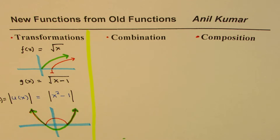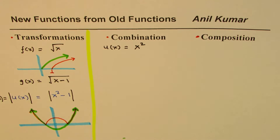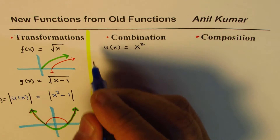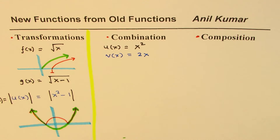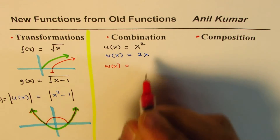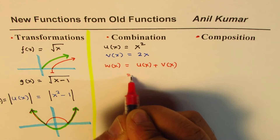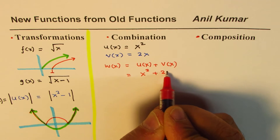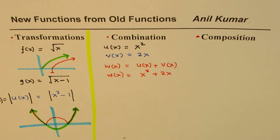Now let's look at combinations. Let's take a function u of x equals x squared — a parabola — and combine it with another function v of x equals 2x. We could have a combination w of x which is the sum of these two, that is u of x plus v of x, which gives us a new function w of x equals x squared plus 2x.